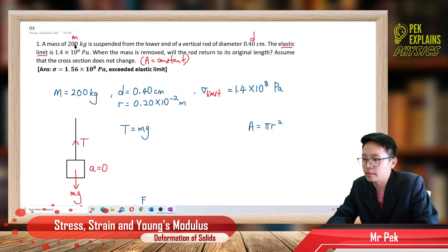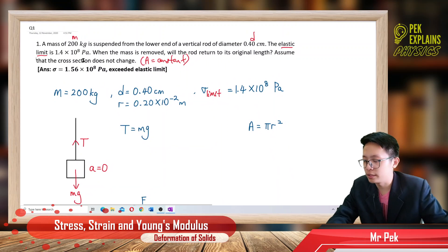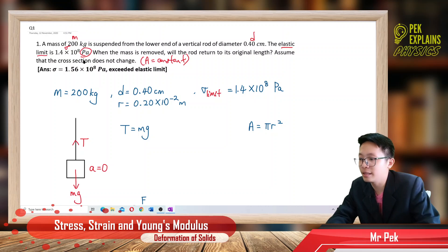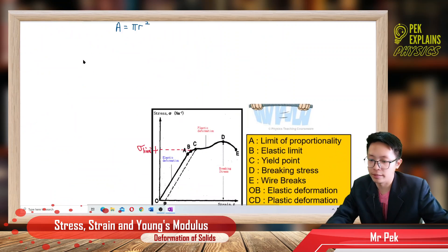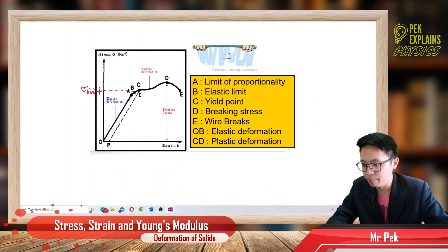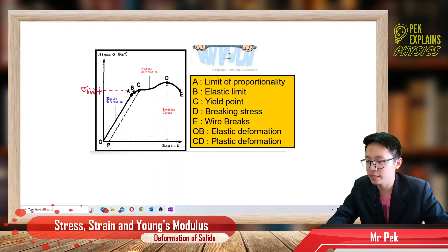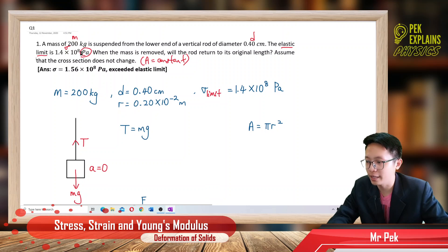What is elastic limit? The unit pascal is the unit for stress. Elastic limit refers to point B on the stress-strain graph — point B is the elastic limit. So the stress for this elastic limit is given by 1.4 × 10⁸ pascal.